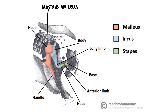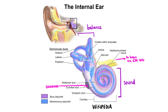The mastoid air cells are a collection of air-filled spaces in the mastoid process of the temporal bone. The inner ear is responsible for converting vibrations into nerve signals so the brain can interpret the sounds, and it also helps with balance. The inner ear has two main components: the vestibular apparatus and the cochlea. The cochlea converts vibrations on the oval window into action potentials which are perceived as sound. Signals are sent to the primary auditory cortex via the vestibulocochlear nerve, that is, cranial nerve 8.